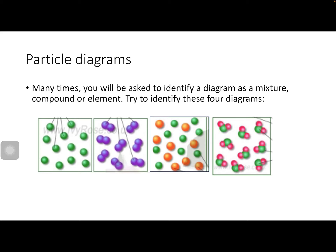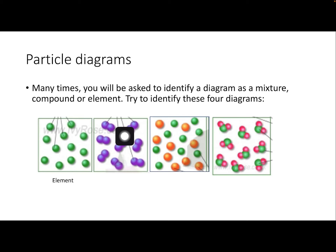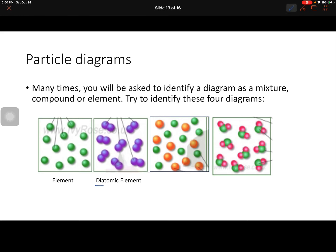Particle diagrams. Many times you'll be asked to identify an element, compound, or mixture using these particle diagrams. You will never be asked to identify whether they are homogeneous or heterogeneous based on these diagrams — just identify that it's a mixture. The first diagram: all the dots are the same color and none of them are connected, so this is an element. The second diagram: the dots are all the same color but connected in pairs — this is also an element, specifically a diatomic element, because the atom naturally comes in pairs.